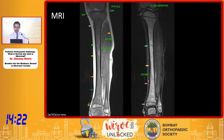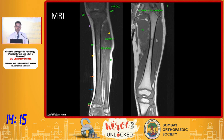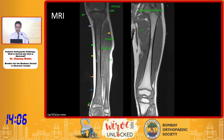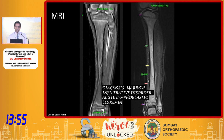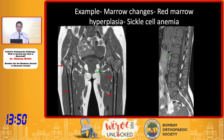This is a fluid-sensitive sequence where we see edema diffusely involving the metadiaphysis and also the epiphysis. Comparing with the normal five-year-old, you can see how the fat is replaced with abnormal tissue. This hypointensity is darker than the adjacent skeletal muscles, so this is not red marrow — something has replaced the fat inside. This is a case of marrow infiltrative disease, that is ALL.